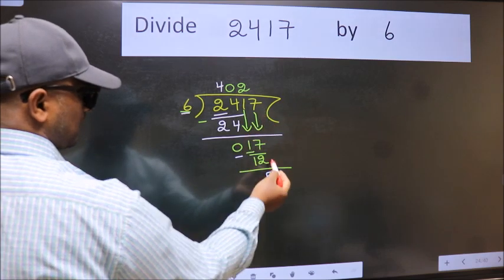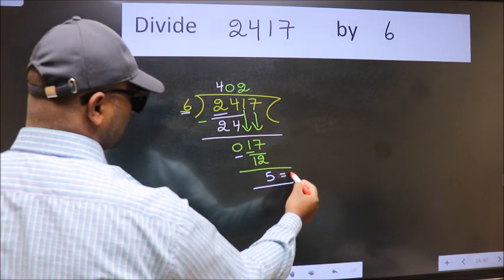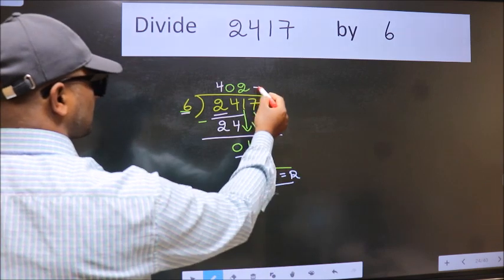No more numbers to bring it down. So we stop here. This is our remainder and this is our quotient.